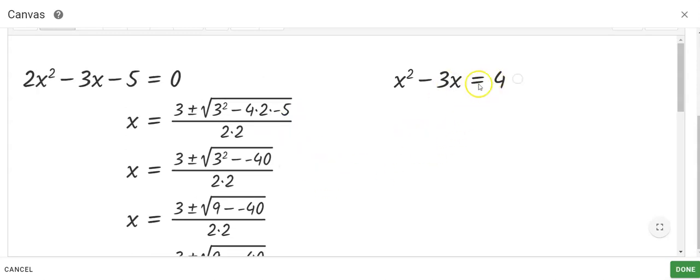For this second one, it's not in standard form. To be in standard form, you have your squared term, your x, and your constant on the left side, and it must be equal to zero. So if you see one like this, put it in standard form first,